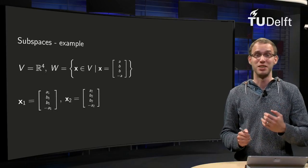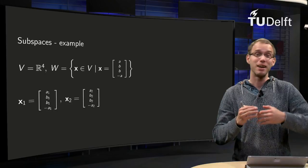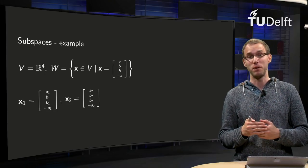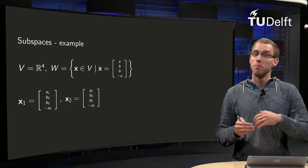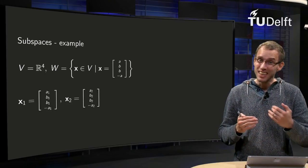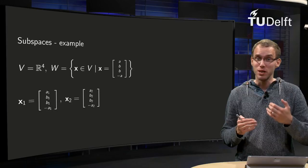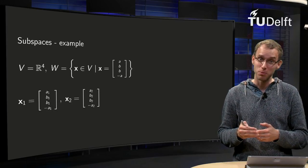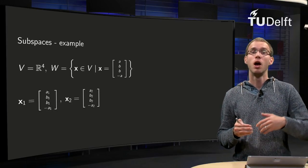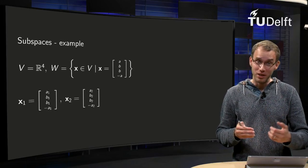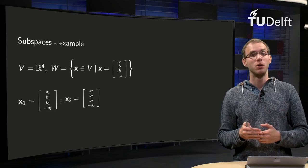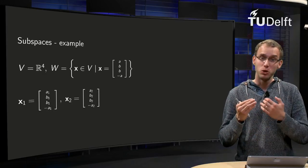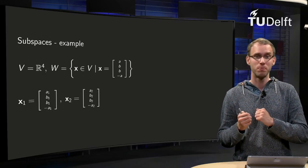Subspaces are nice because they inherit all properties of a vector space. But how can you see whether a subset of a vector space is a subspace? You already know the definition; we will now see how this works in two examples.